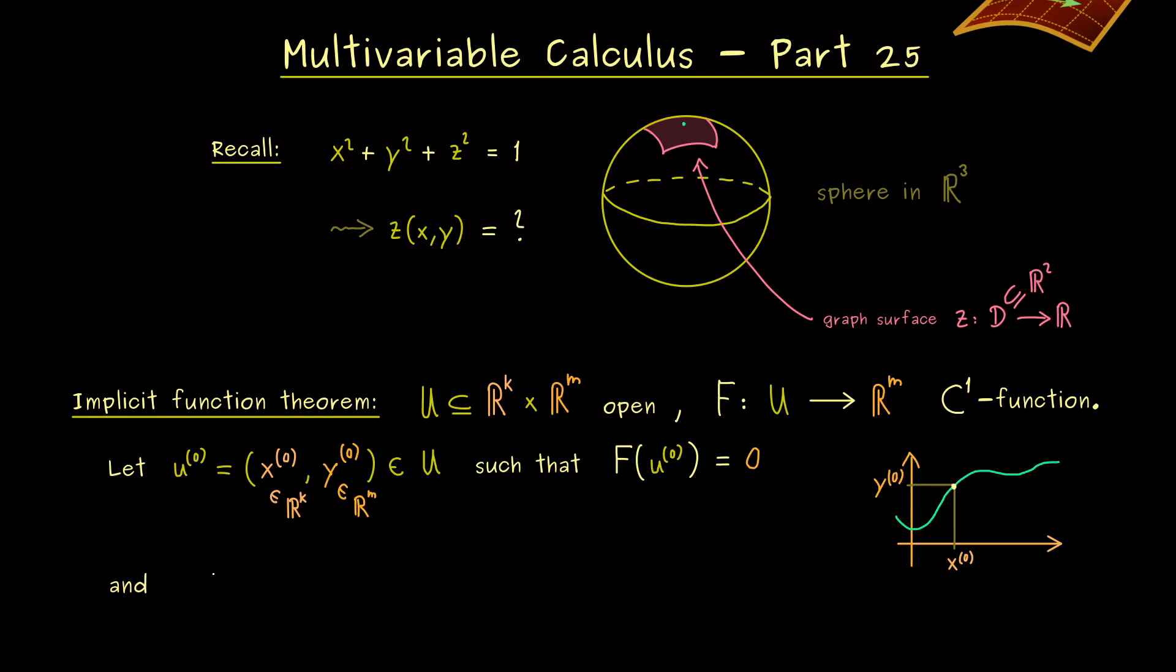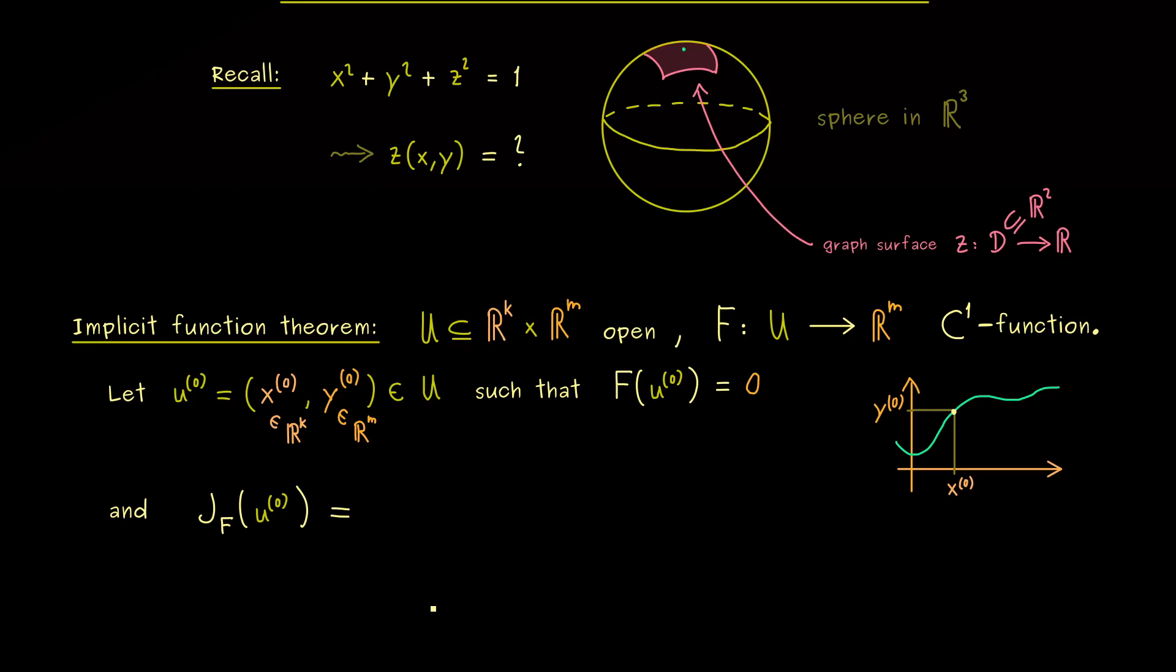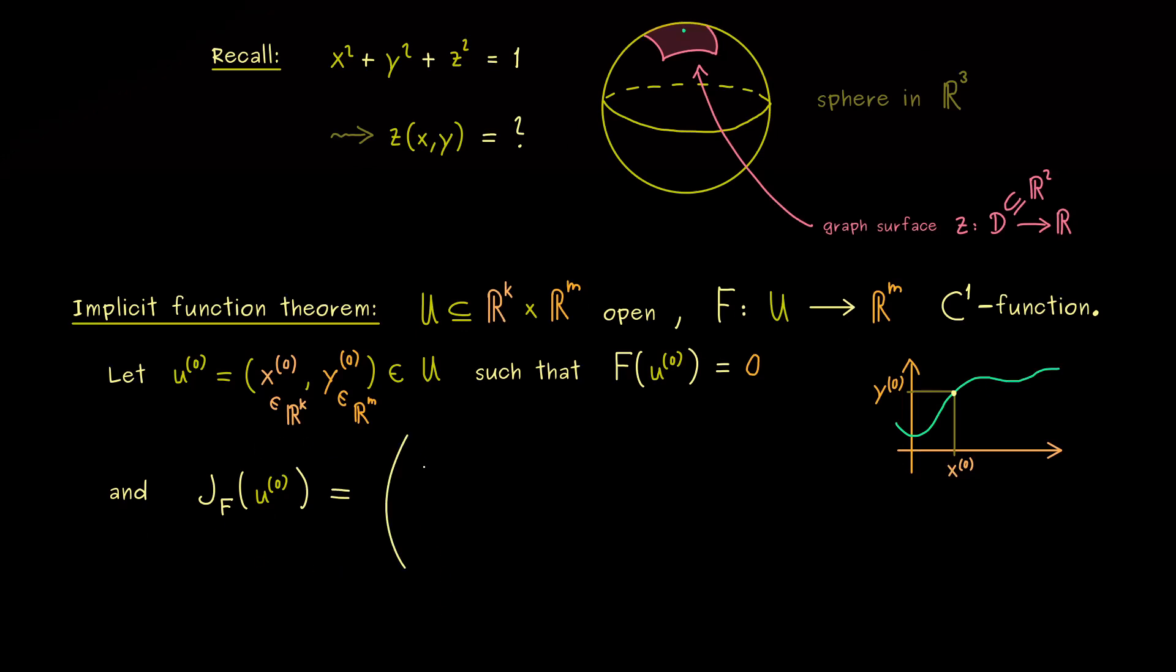And now our good analysis knowledge tells us that for a C^1 function locally we can do a linearization, and we can describe this with the Jacobian matrix. So let's look at the Jacobian at the point u^0. It's an n times n matrix, but we can also split it up. This means first we can look at the k variables with x. Hence our first column here is simply dF/dx_1. And then we have more columns until we reach the kth one, which is the partial derivative of F with respect to x_k. And then in the next column obviously we have x_{k+1}. And then we continue until we reach the last one with x_n.